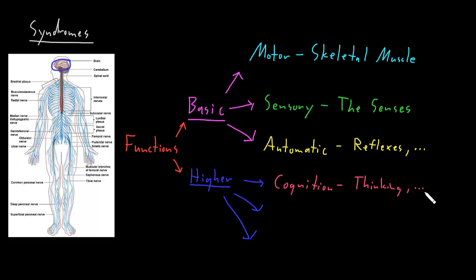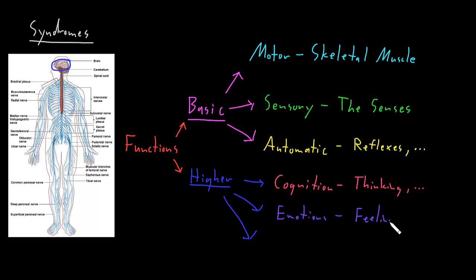There's plenty more detail on that for later videos. The next big category of higher functions I call emotions — our feelings. It turns out there's a lot more to emotions than just what we feel, because emotions play a major role in our experience of life and in many other functions of both the nervous system and the rest of the body.